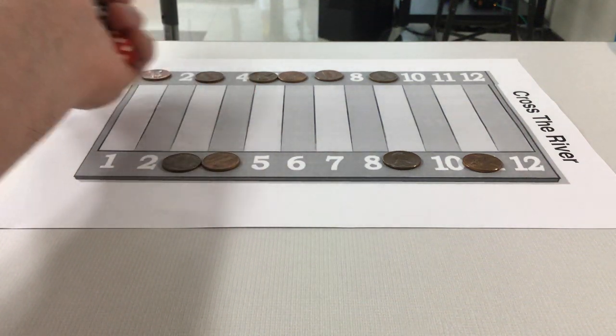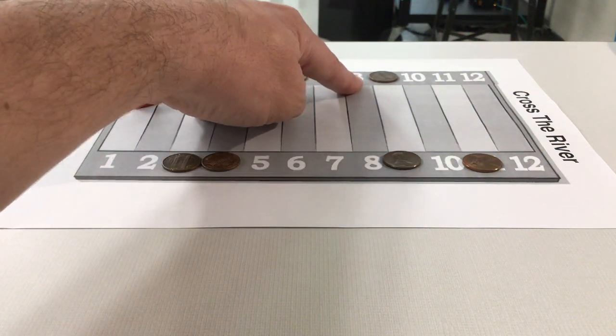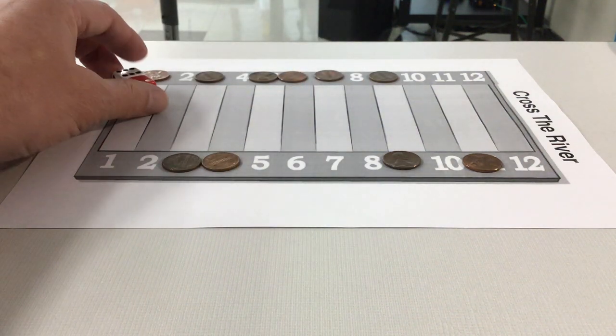So I'm going to go to the other side, and the other person's going to go six, seven, eight. There's no pennies on eight, so they kind of lose a turn.